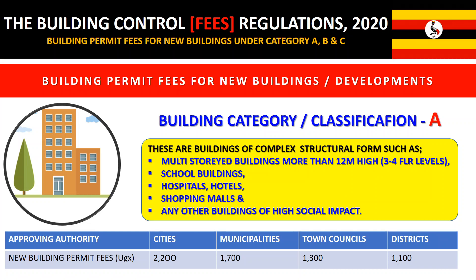Under cities, the fee is 2,200 per square meter; 1,700 per square meter in municipalities; 1,300 in town councils; and 1,100 in districts. All these fees are charged per square meter.